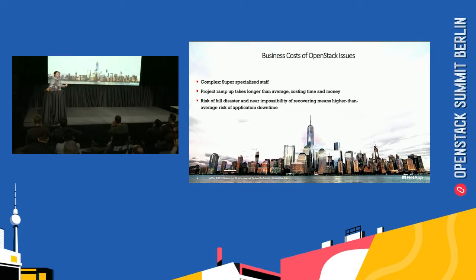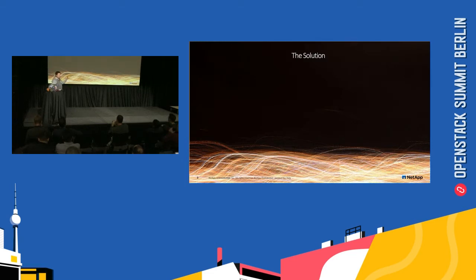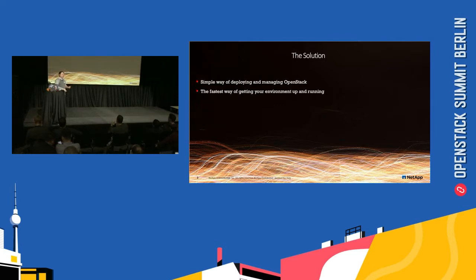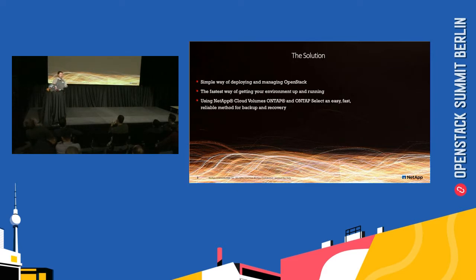There's also the risk of a full disaster. There's no internal DR solution for OpenStack — you don't have a way to back up your entire environment and pull it back if something happens. In my position, which requires me to architect solutions, I wanted to find a simple way of deploying and managing OpenStack — the fastest way to get an environment up and running. And because I work for NetApp, I needed to use NetApp in some form. So I've used our cloud software-defined solution in AWS and Azure, and our ONTAP Select solution — our software-defined KVM software — as my two backend storage methods that I'll have OpenStack pointing at.